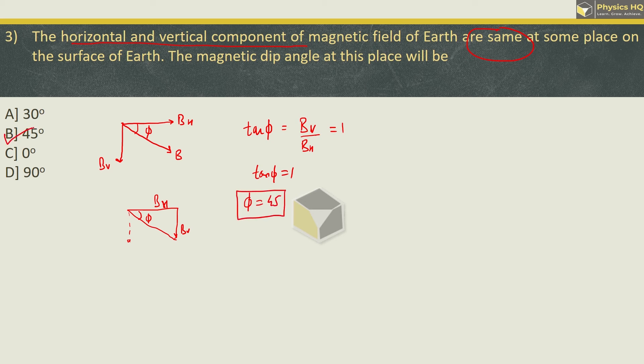So the correct option here will be option B, 45 degrees. Hope you all understood this. Next MCQ: inside a bar magnet.